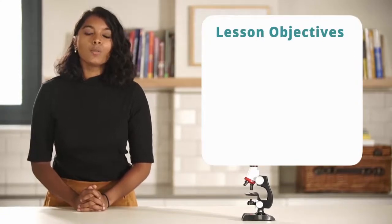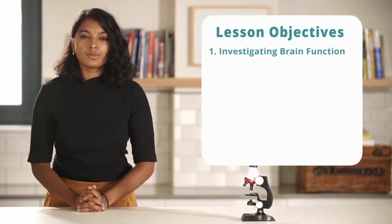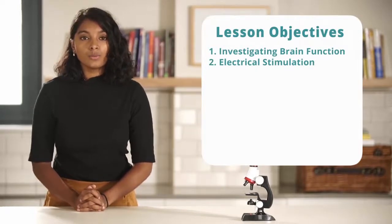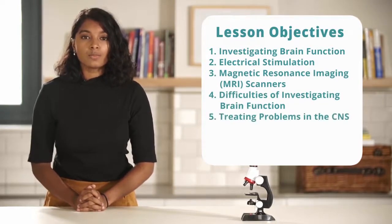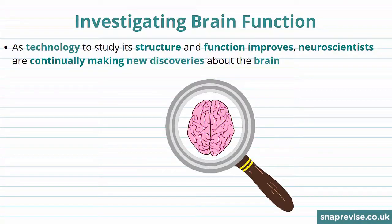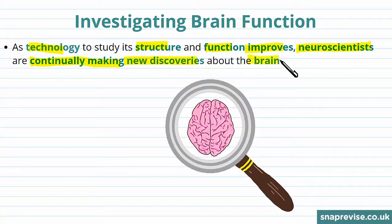In this video we'll be discussing investigating brain function as well as electrical stimulation. We'll also be discussing magnetic resonance imaging scanners, the difficulties of investigating brain function and treating problems in the CNS, and finally a summary. We know the function of the brain is to process information, but the brain is really complicated and we still don't know lots of things about it. As technology to study the structure and function improves, neuroscientists are continuously making new discoveries about the brain.